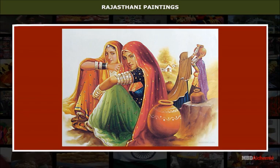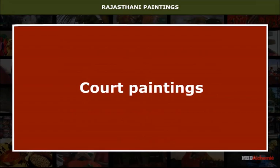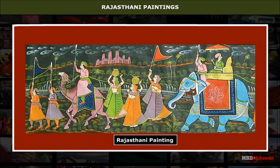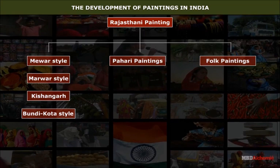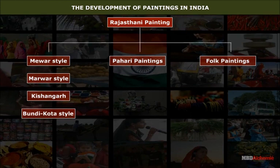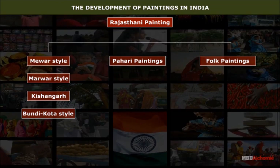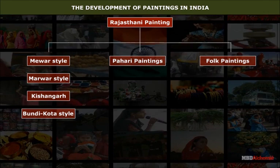The origin of Rajasthani paintings dates back to the early 16th century. Rajasthani painting is generally found in three forms: court painting, literary painting, and folk painting. Depending on regional variations, Rajasthani painting is further divided into four distinct styles: Mewar style, Marwar style, Kishangar style, and Bundi-Kota style. All four styles developed during the reigns of the Sisodia, Kacchavaha, Rathor, and Hara rulers respectively.